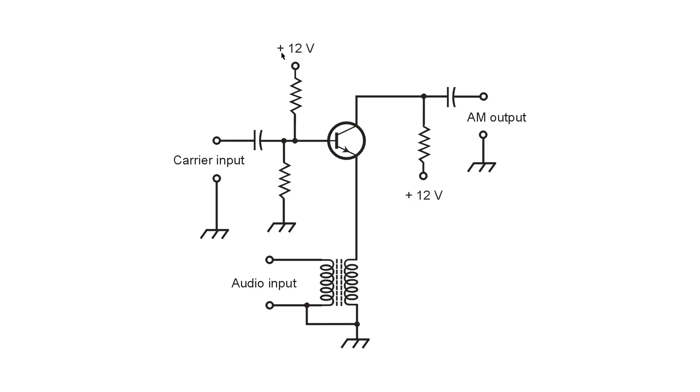Or it could be a field effect transistor, in which case you'd get rid of this resistor right here between the control electrode, in this case the base, and the power supply. But this example uses an NPN bipolar transistor, the emitter, the base, and the collector.